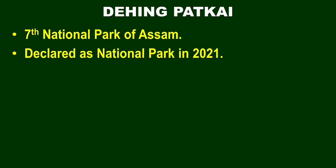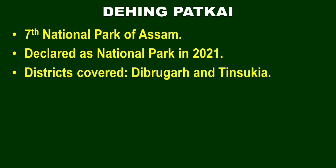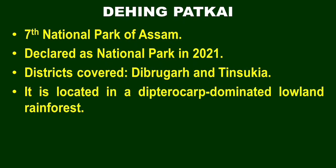Coming to the seventh national park of Assam, named Dihing Patkai National Park. It was declared just after Raimona National Park, with notification also for Dihing Patkai. The district covered includes Tinsukia and Dibrugarh. It is located in a dipterocarp-dominated lowland rainforest. The dipterocarp is a plant family important in this region, different from other forest types in India.